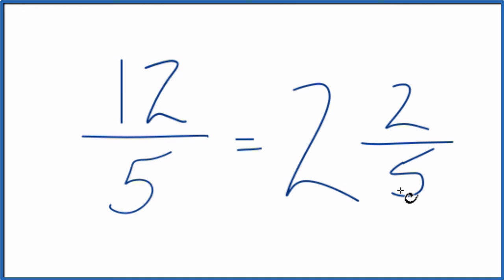You can check that 2 times 5 is 10, plus 2 would give us the 12 like we have here, 12 fifths.